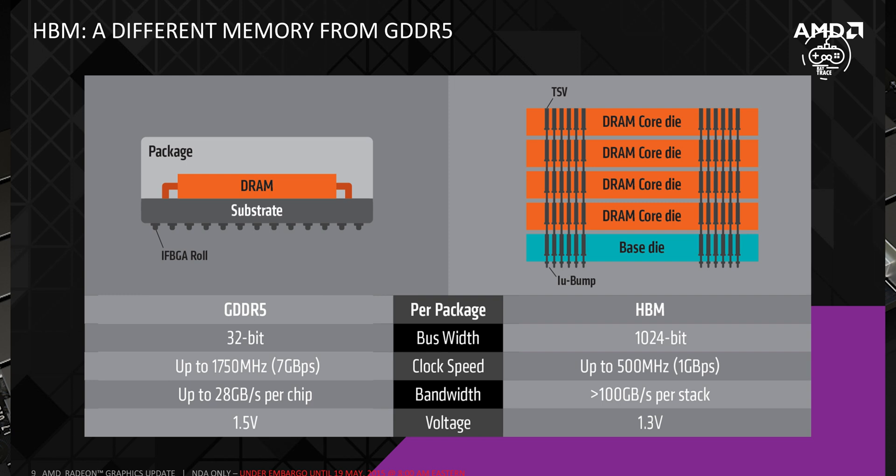Each channel operates independently and is not synced with the others. In this way, HBM2 delivers better performance while consuming very little power. Considering the architecture, an HBM memory has a non-planar, three-dimensional structure. The design has a cubical shape, entailing stacking memory chips one on top of the other to create a cube-like appearance. This maximizes space efficiency by using less space while providing better performance and density.